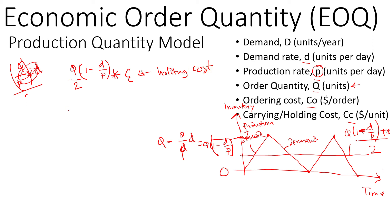The total ordering cost: if our demand is D and we place Q number of orders, that will be the total number of orders times the ordering cost Co. So this is the order cost.